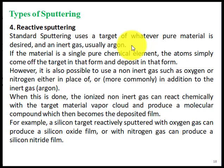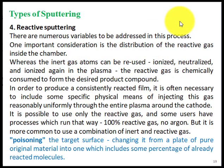For example, a silicon target reactively sputtered with oxygen gas can produce a silicon oxide film, or if reacted with nitrogen gas it can produce a silicon nitride film. There are numerous variables to address: one important consideration is the distribution of reactive gas inside the chamber. Whereas inert gas atoms can be reused — ionized, neutralized, and ionized again in the plasma — the reactive gas is chemically consumed to form the desired product compound.